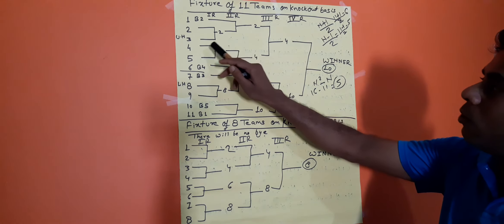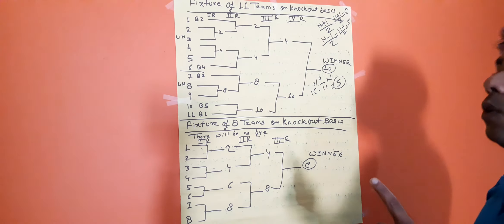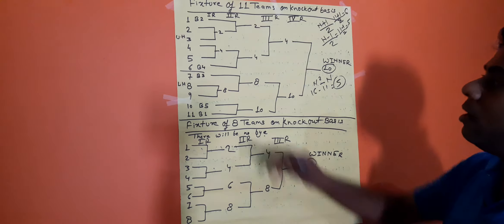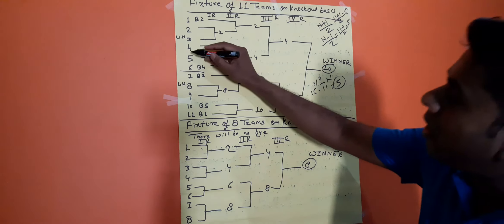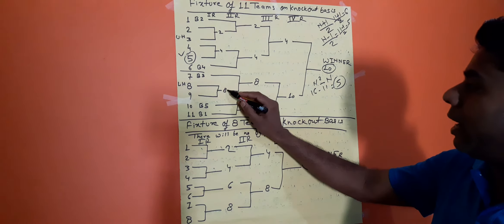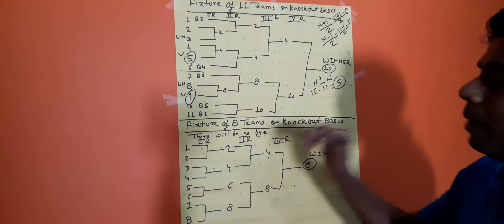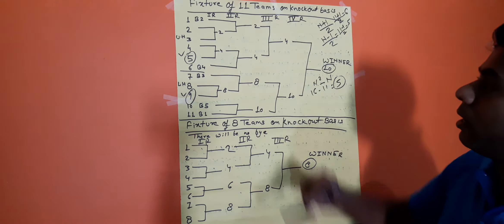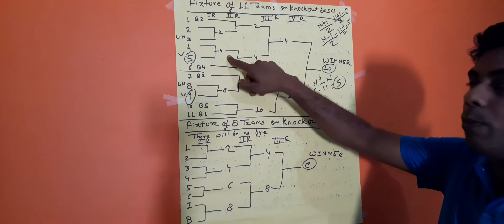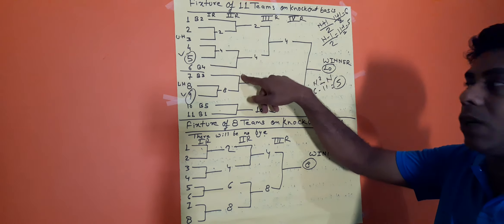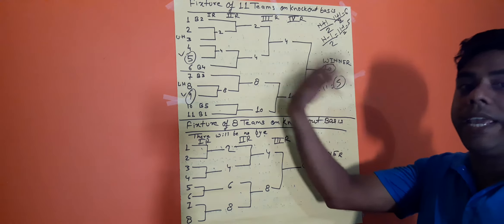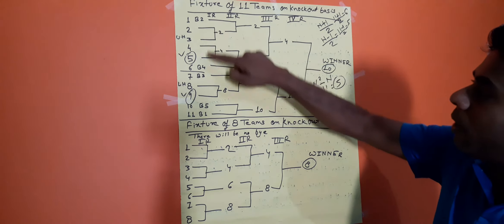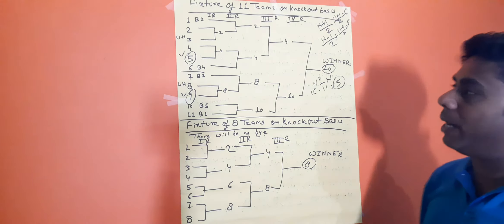In the 1st round, only three matches are played: 2 vs 3, 4 vs 5, and 8 vs 9. Assuming 2 wins, 3 is eliminated. 4 wins, 5 is eliminated. 8 wins, 9 is eliminated. The rule of knockout: a team plays continuously until defeated; once defeated, they are automatically eliminated. So winners 2, 4, and 8 advance, giving 8 total teams in the 2nd round.